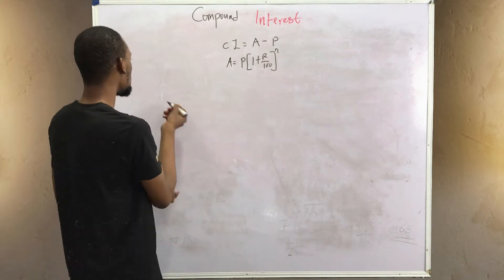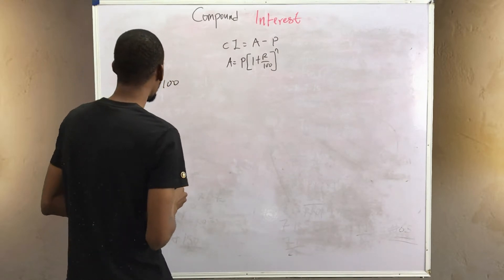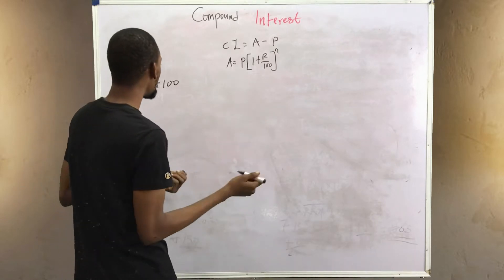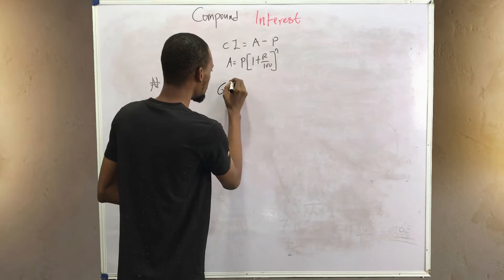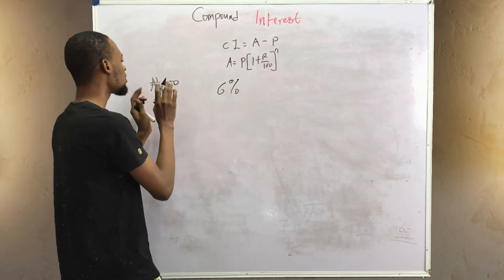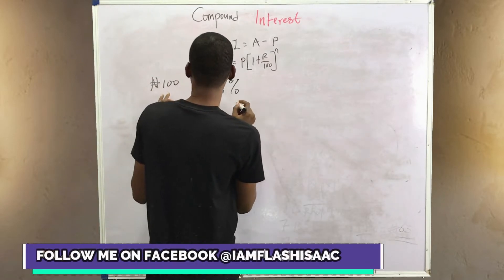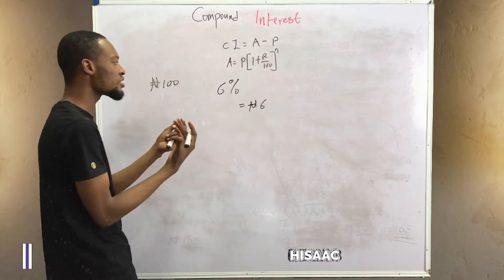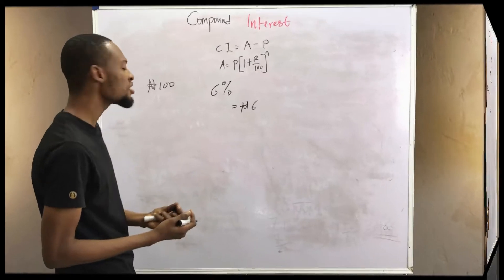For example, if you take a loan of 100 naira from a bank, in simple interest if you agree to pay six percent yearly, for two years the interest will remain the same. Six percent of 100 naira is simply six naira. So in simple interest your interest remains fixed.